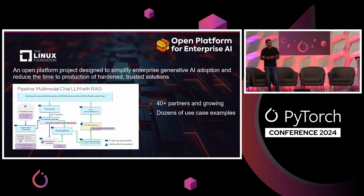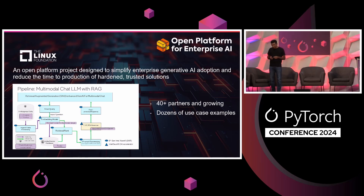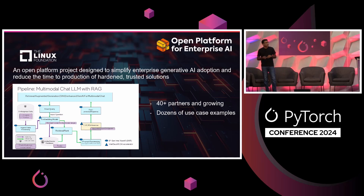Let's talk about PyTorch-based solutions. OPIA is a PyTorch-based project contributed by Intel to the Linux Foundation AI and Data. It's an open platform project designed to simplify enterprise adoption of AI, especially generative AI, and reduce the time to production of hardened and trusted solutions. There are already over 40 partners, including Hugging Face, Red Hat, VMware, ByteDance, and AMD joined recently. OPIA is a collection of composable microservices that you can integrate directly into your applications. It also has off-the-shelf end-to-end solutions for common customer use cases like RAG, built on those microservices. It also provides a way for you to measure accuracy, performance, and throughput for your end-to-end solutions.